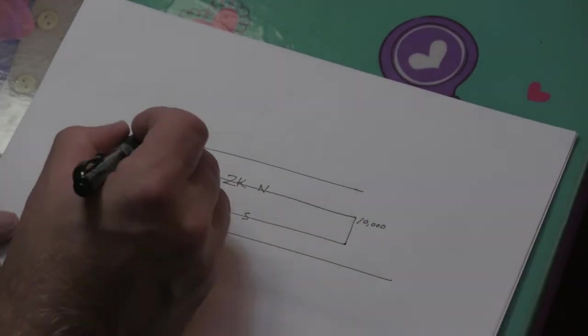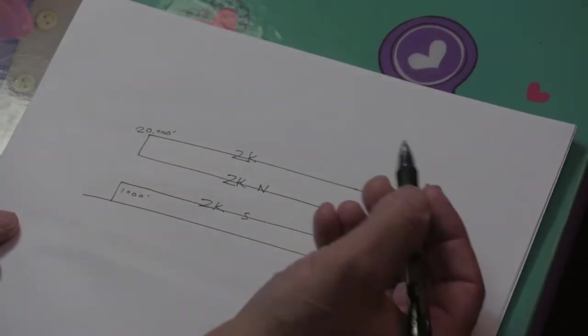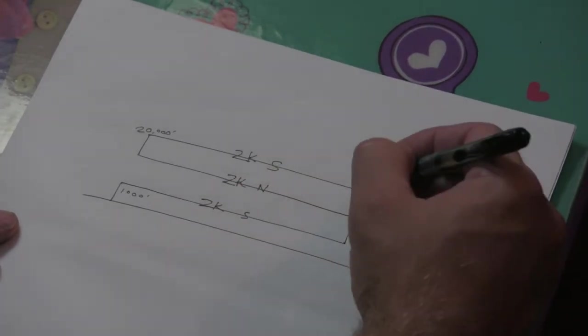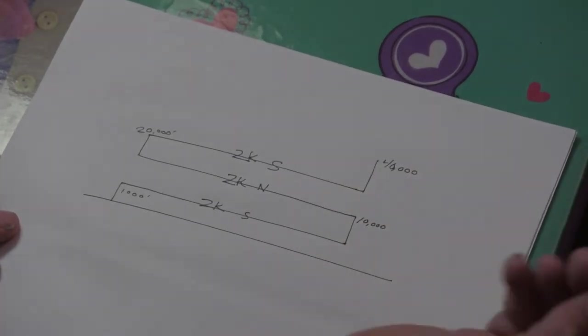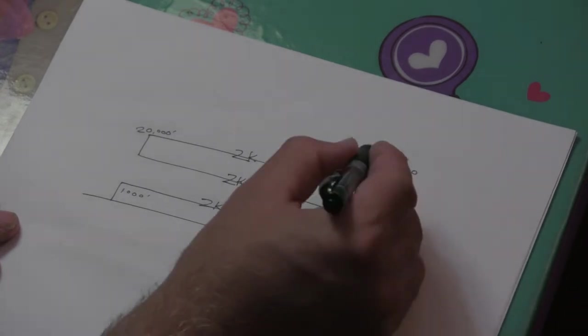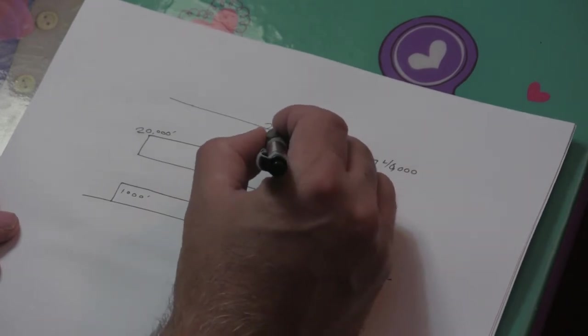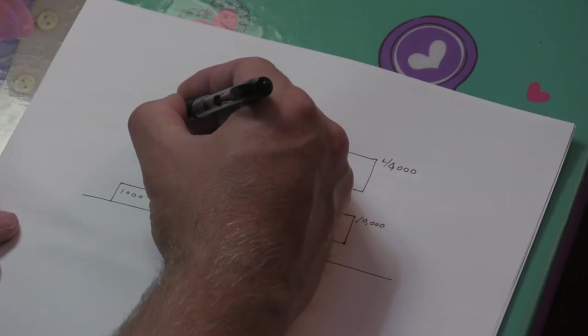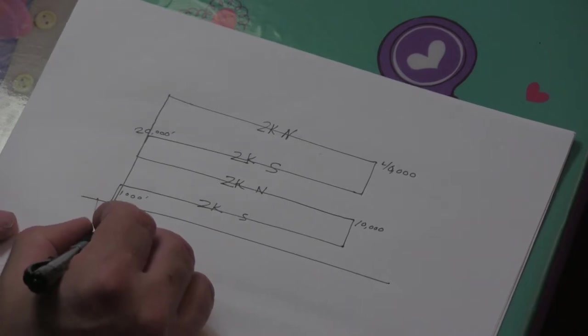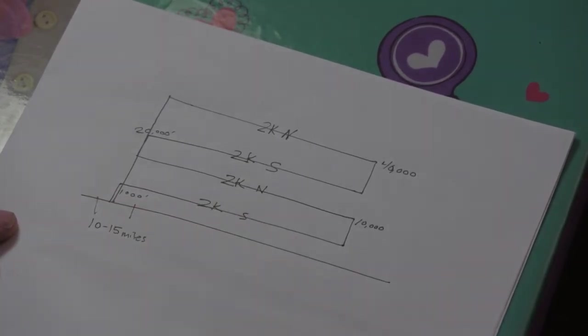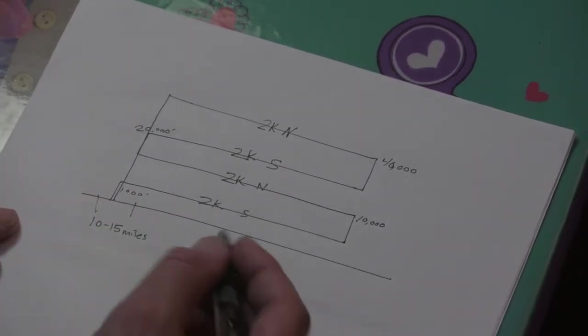2,000 miles north. Stop. And we travel up to 20,000 feet. We travel 2,000 miles south. We stop after 2,000 miles. We head up to 40,000 feet if possible. And then we travel back north 2,000 miles. And we land. We will land approximately 10 to 15 miles away from where we started. If that's the case, the Earth is flat.